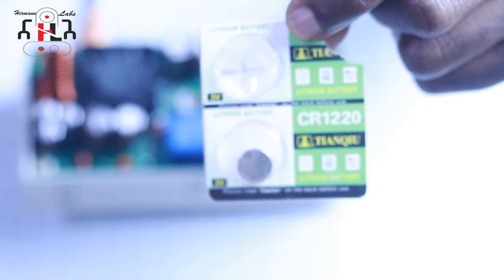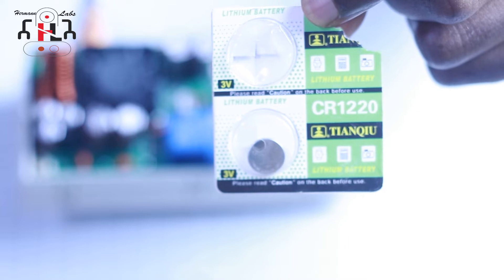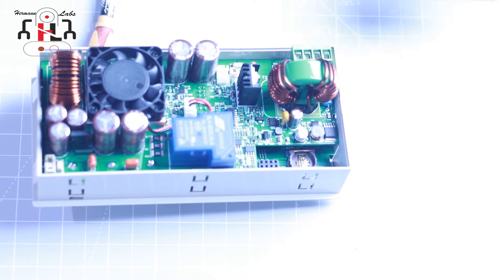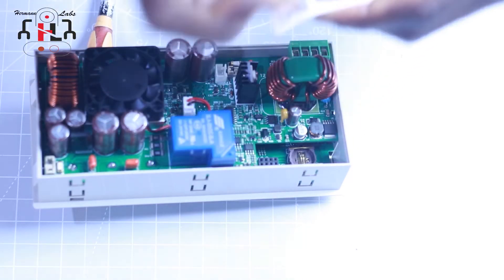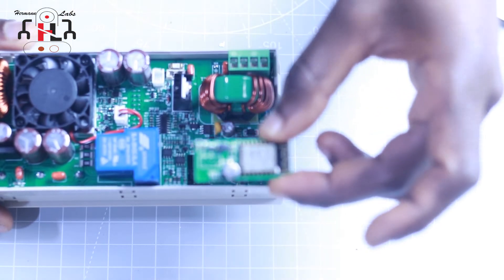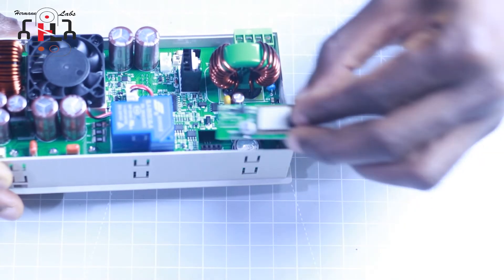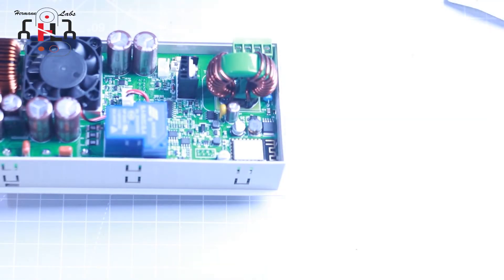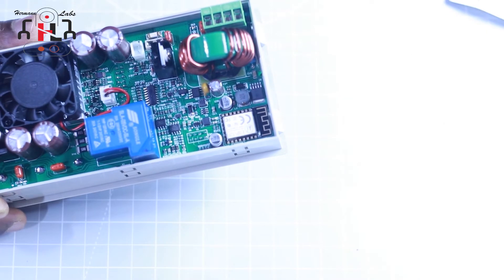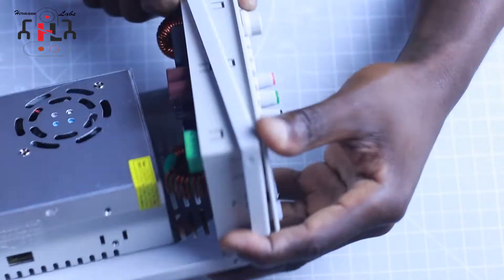But before we do that, as you can see on this module, we have to insert the CR1220 CMOS battery to keep the real time clock powered even when the unit is not powered so as to avoid setting the time every time we power the supply unit. And then now we plug in the Wi-Fi module. After all this is properly done, we can now insert the controller module into place within the case.